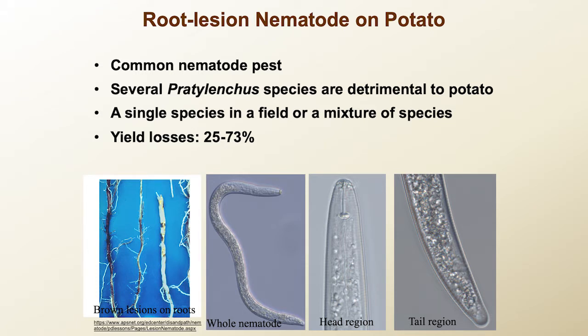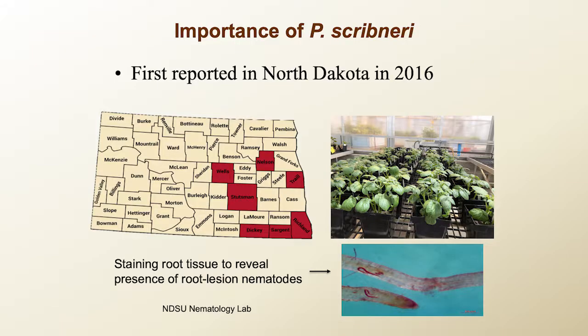Several root lesion nematodes — like Pratylenchus penetrans, which you may know, and also Pratylenchus scribneri, neglectus, and crinatus — are harmful to potato. However, these nematodes are very similar in morphology and you cannot easily identify them among species with a microscope. That's why we developed a molecular, DNA-based method to help identify this type of nematode.